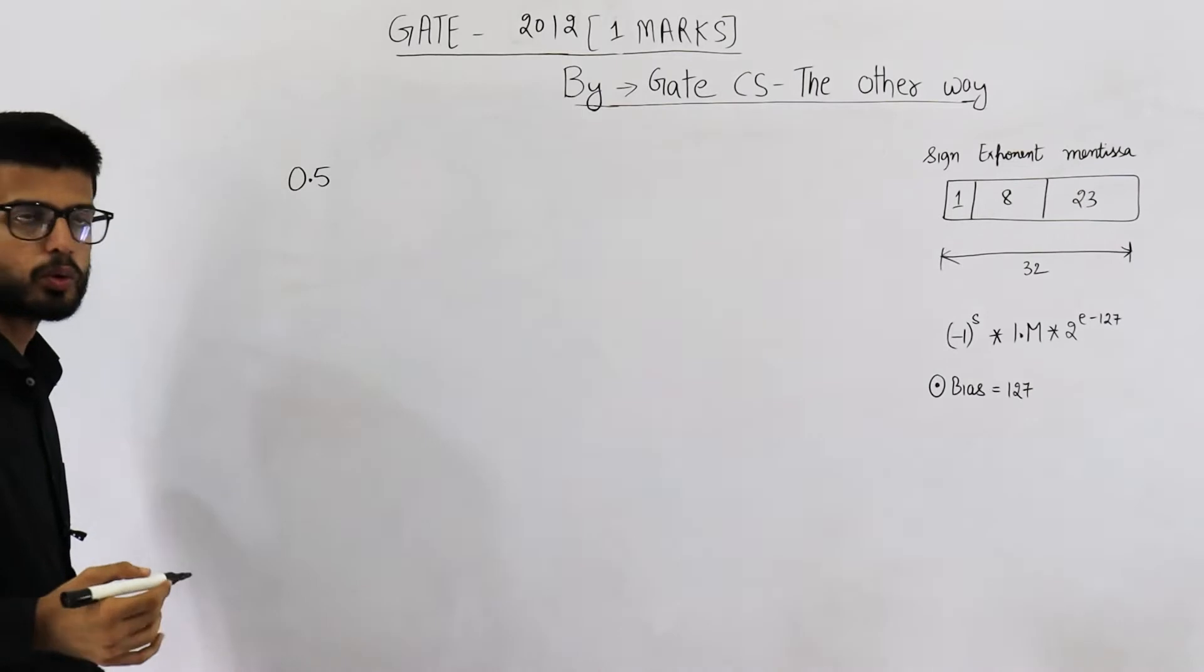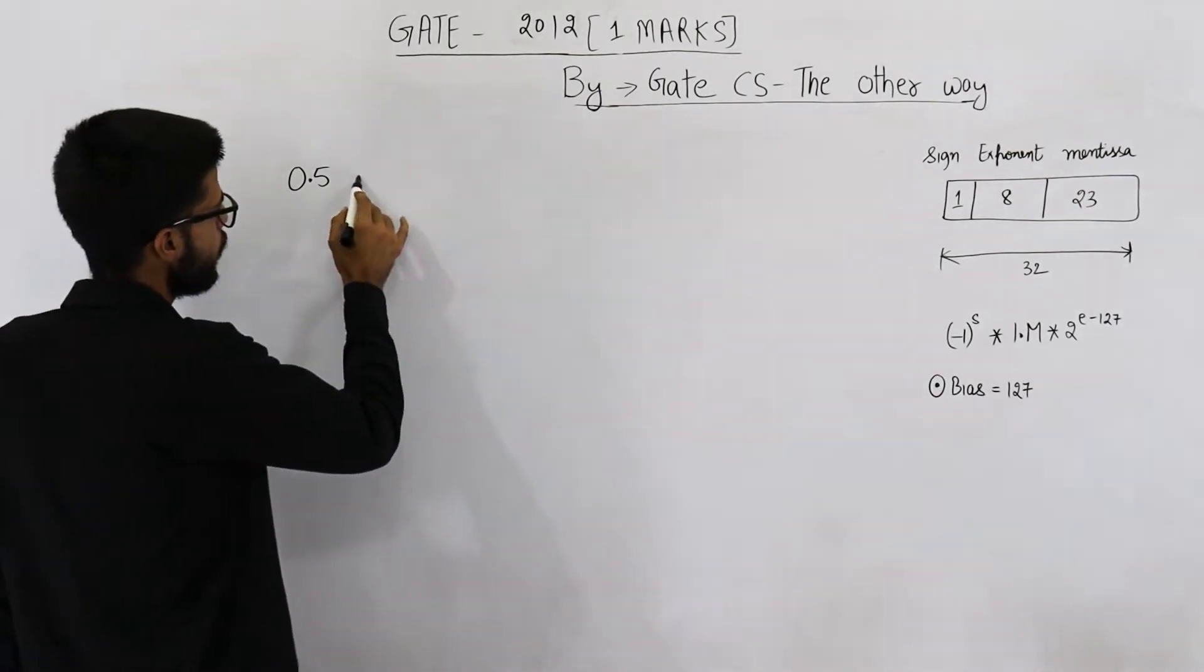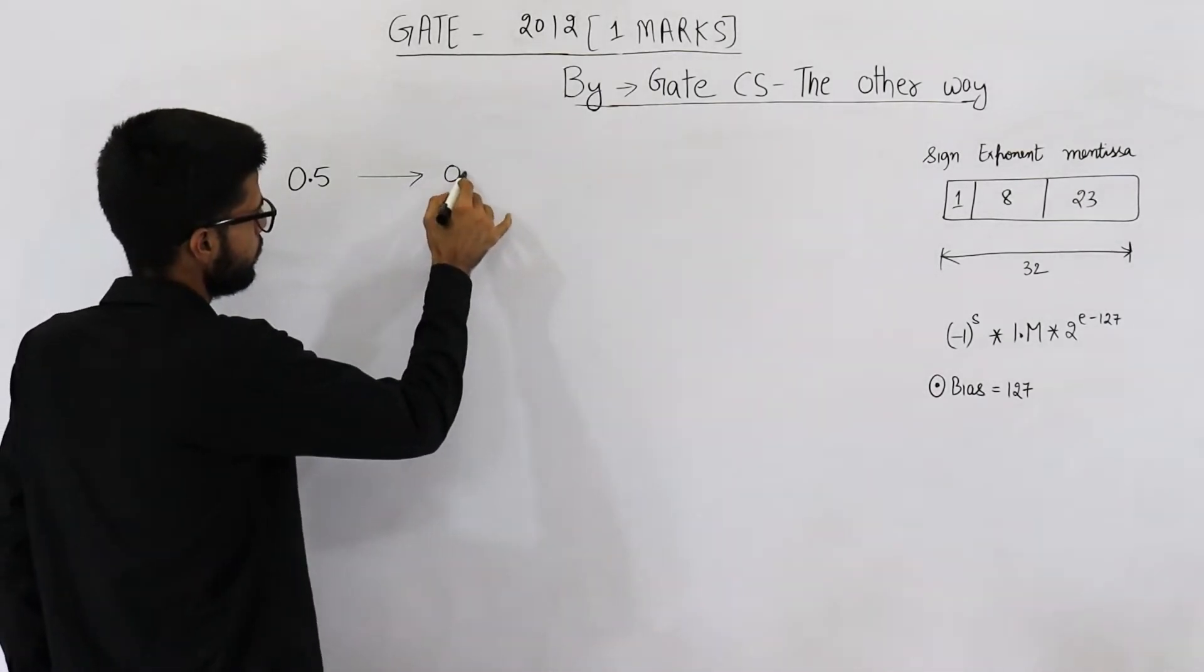Step 1, convert this number into binary. So binary for 1 by 2 is 0.1.